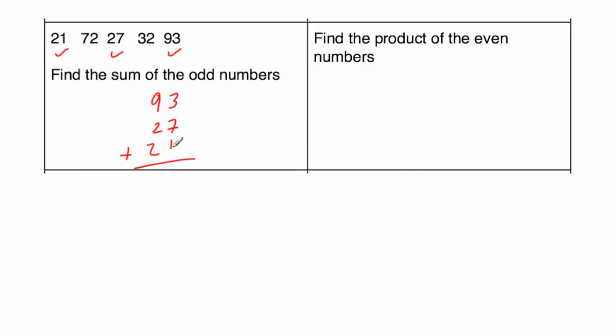3 plus 7 is 10, plus 1 is 11. So put the 1 down, carry the 1. 9 plus 2 is 11, plus 2 is equal to 13, plus 1 is 14. So the answer is 141.